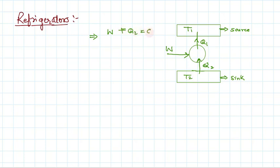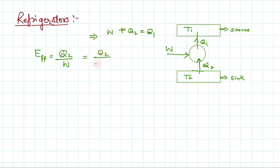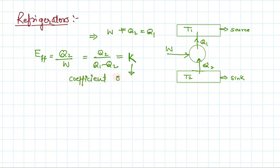From energy conservation for a refrigerator: W + Q2 = Q1. The parameter defined here — what you get is the extracted heat Q2, and what you paid is the work done W — gives Q2/W = Q2/(Q1 - Q2). This is not called efficiency; instead it is called the coefficient of performance, denoted K.